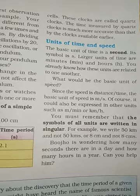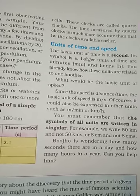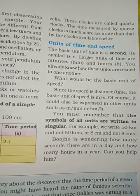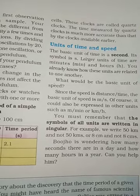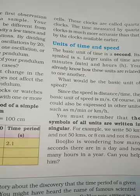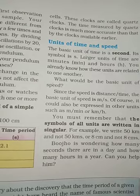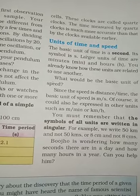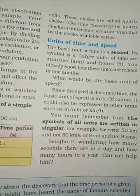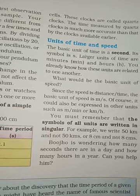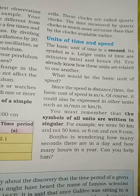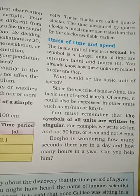Larger units of time are minutes (min) and hours (h). You already know how these units are related: 60 seconds equals 1 minute, and 60 minutes equals 1 hour. The basic unit of speed is meters per second, though it can also be expressed as kilometers per hour. Remember that the symbols of all units are written in singular — for example, 50 km, not 50 kms, and 8 cm, not 8 cms.